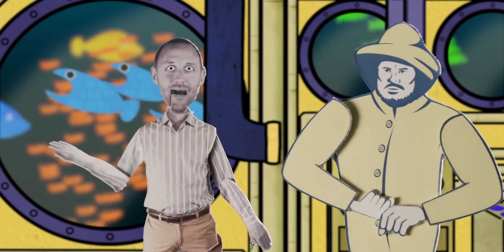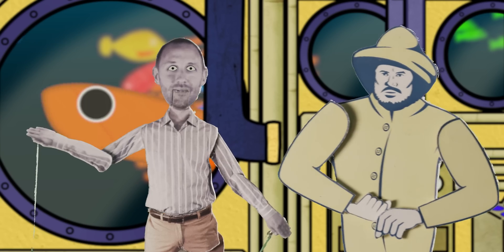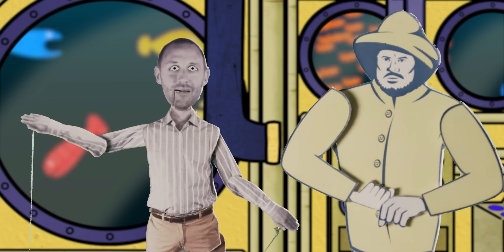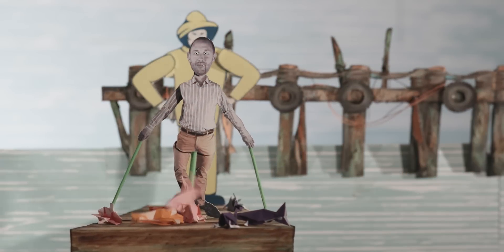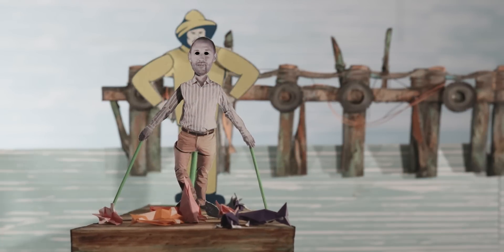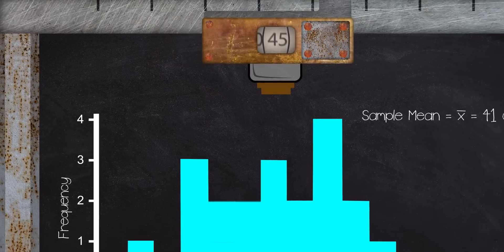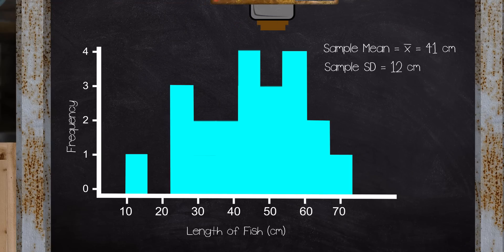Of course, we cannot measure all the fish in this lake, and so instead we take a random sample. Let's take a look at a sample of 25 fish. We can see that for these 25 fish, the sample mean length is 41 centimeters, and the sample standard deviation of the length is 12 centimeters.